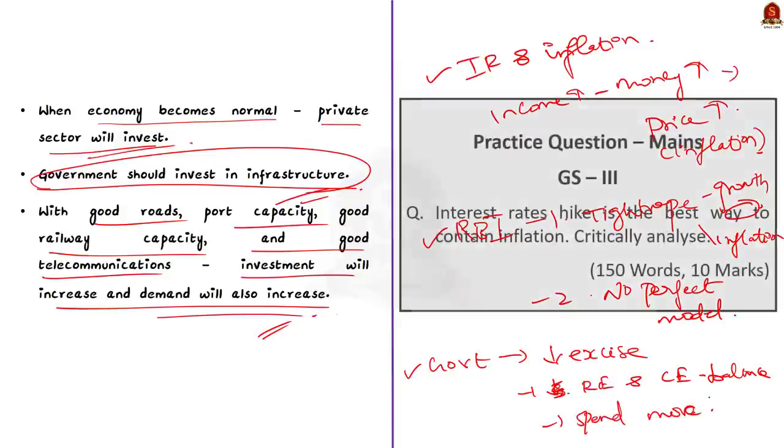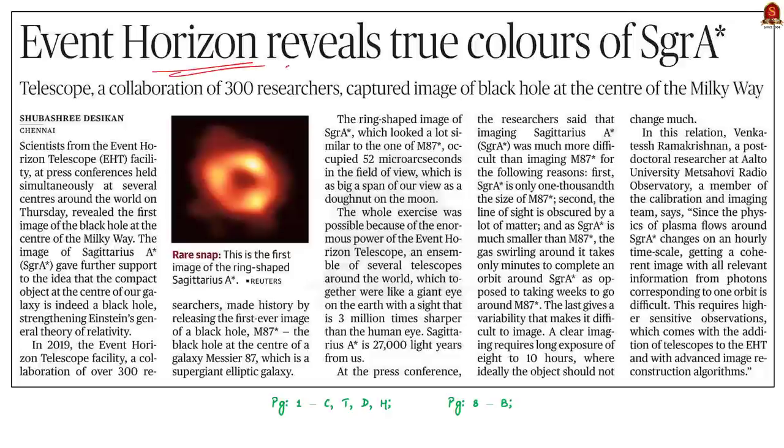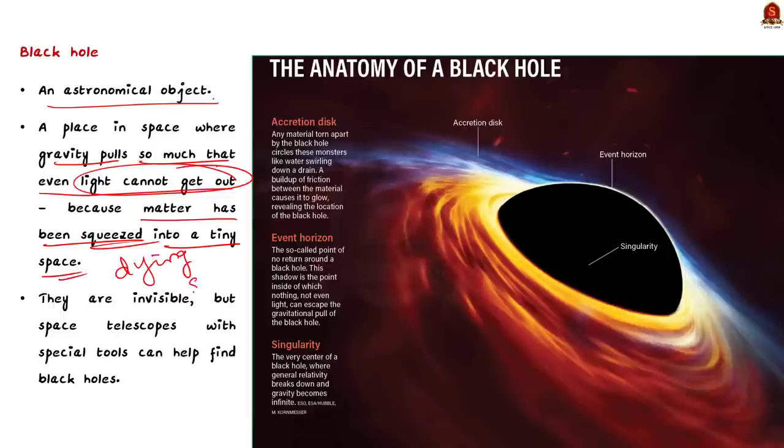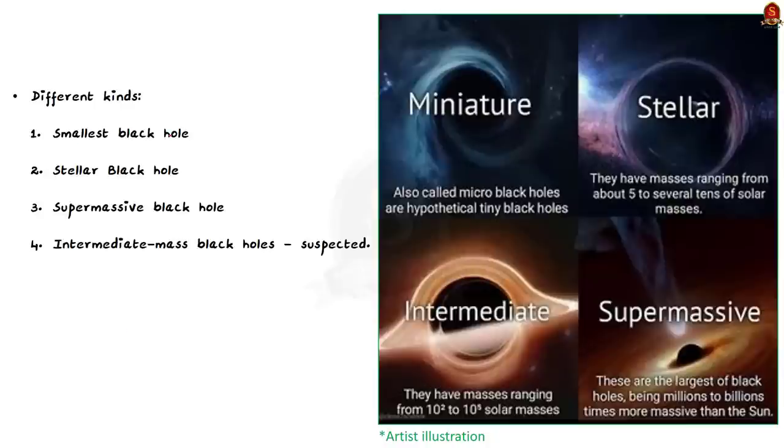Friends, see this article here. The news article mentions that the Event Horizon Telescope has revealed the first image of a black hole called Sagittarius A star. So what is a black hole? A black hole is an astronomical object. It is a place in space where gravity pulls so much that even light cannot get out. The gravity is so strong because matter has been squeezed into a tiny space. This can happen when a star is dying. Since no light can get out, people cannot see black holes. They are invisible. Only space telescopes with special tools can help find black holes.